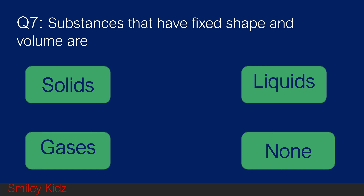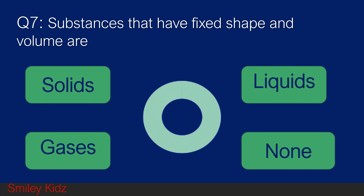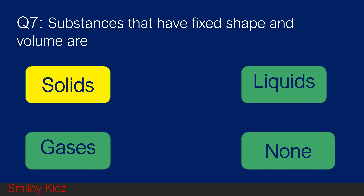Question number 7. Substances that have fixed shape and volume are: option A solids, option B liquids, option C gases, and option D none. Your time starts now. And your time is up. The right answer is solids. Substances that have fixed shape and volume are solids.